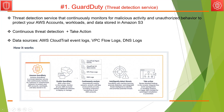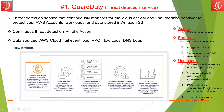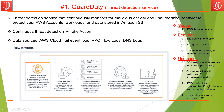Once GuardDuty finds threats, you can define your own workflows or trigger AWS Lambda functions to take some actions. The scope of the service is at the AWS accounts level. You can enable this with a single click — no agents to install — and it can monitor up to 5,000 member accounts. Use cases include detecting if any EC2 instance is involved in mining cryptocurrency, communication with malicious IP addresses or domains, login behavior deviating from expected patterns, or unusual data volume requests to S3.